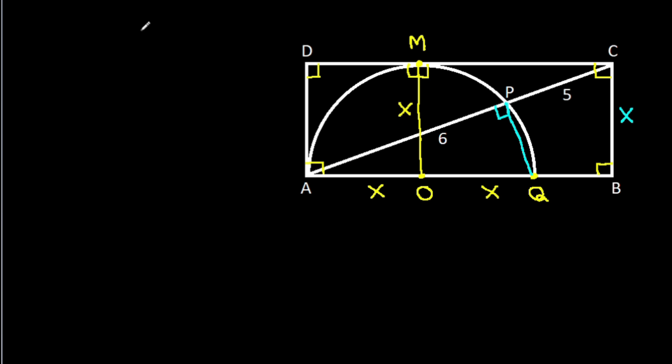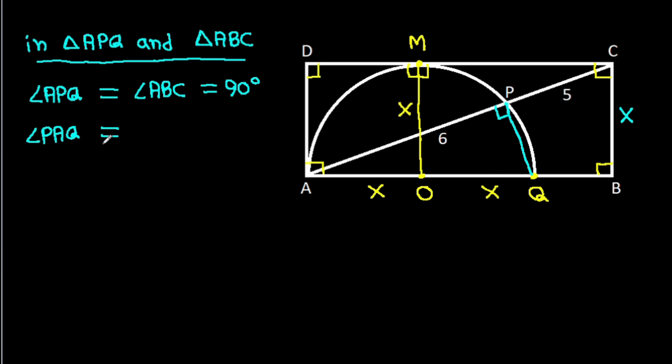And now, in triangle APQ and triangle ABC, angle APQ is equal to angle ABC. Angle APQ is equal to angle ABC, that is 90 degrees.